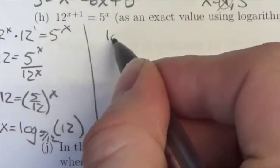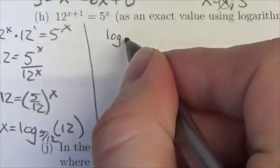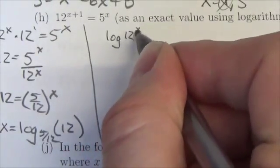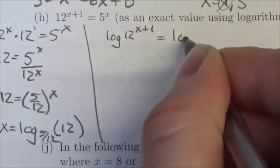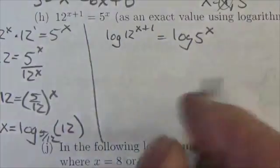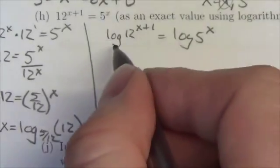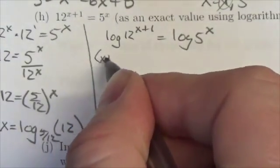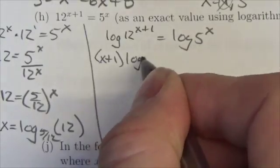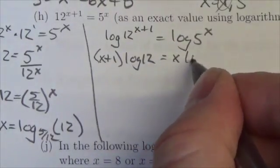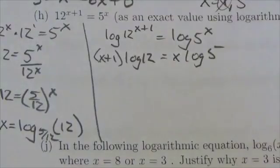You'll take the log of both sides. Now I gotta write small here. Log of 12 to the x plus 1 is equal to the log of 5 to the x. Okay and then you'll take advantage of the laws of logarithms to bring down the exponent, make this x plus 1 log of 12, make this x log of 5.